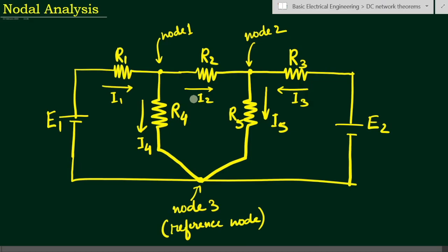This method is particularly used for networks having many parallel circuits. Here we can see we have considered a circuit where this branch, this branch, and this branch are in parallel. This method is specially suited for networks where we have a common ground point. Here we have considered this as the common ground point.